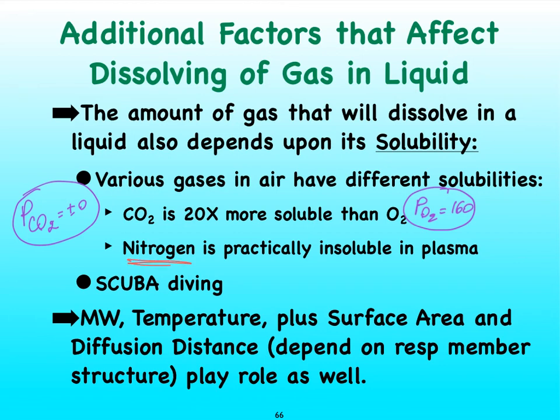If we look at nitrogen's partial pressure, it is the highest at sea level compared to the other gases — it's almost 600, if I remember correctly.